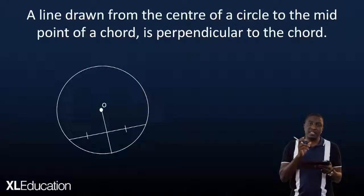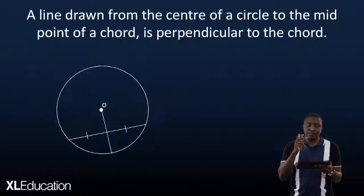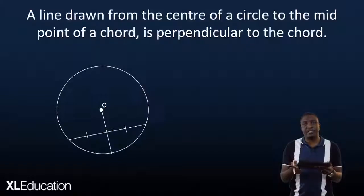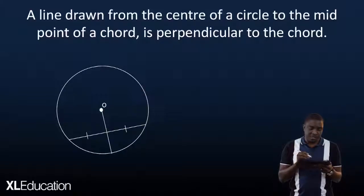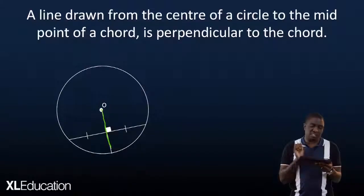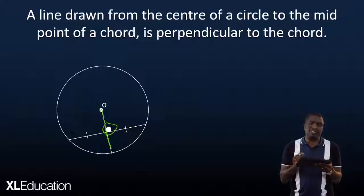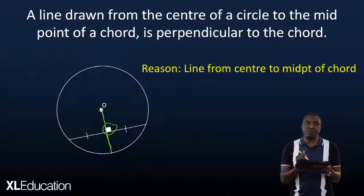The next theorem is the converse of the previous one: a line drawn from the center of a circle to the midpoint of the chord is perpendicular to the chord. Because this line is bisecting the chord, an angle of 90 degrees comes about. Remember to state the reason, which is: line from center to midpoint of chord.